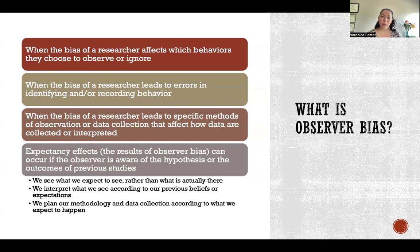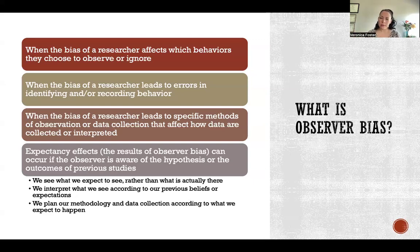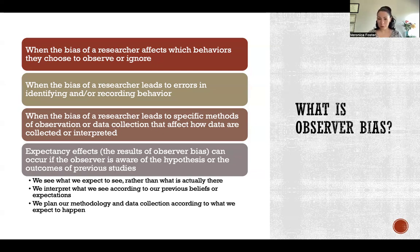Observer bias can also happen if the bias of the researcher leads to errors in identifying or recording behavior. It could be not necessarily a conscious choice to observe this behavior versus that behavior, but it could be a matter of making mistakes when observing the chosen behavior. So they might observe the chosen behavior and incorrectly identify the behavior, incorrectly record how the behavior happened, or incorrectly interpret what the behavior might mean.